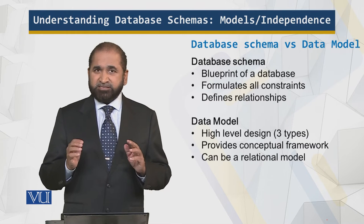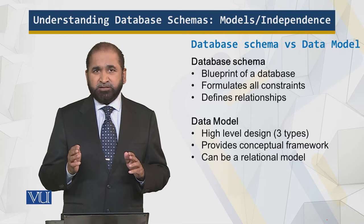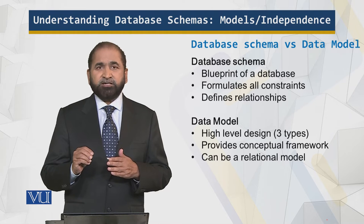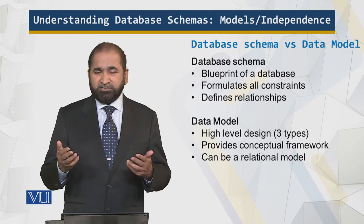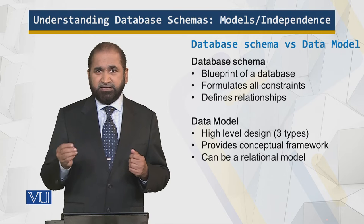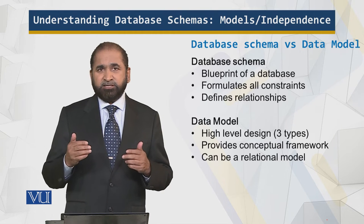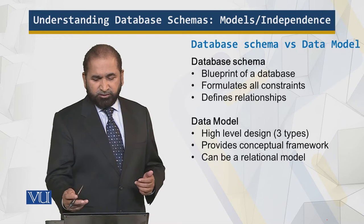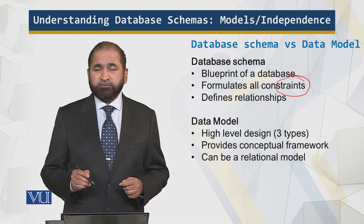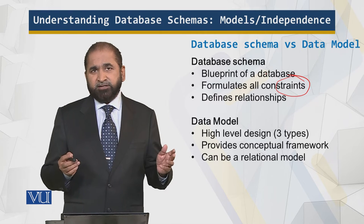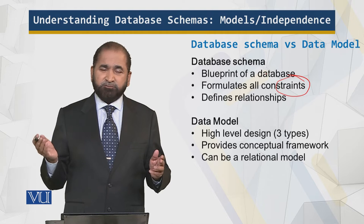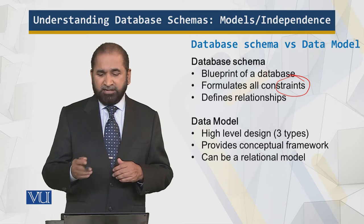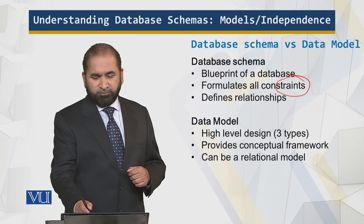We have the database schema and we have the database model. The database schema gives the nitty-gritty details about the data — it's the database blueprint. Just like an architect provides a map with all the fine details, the schema contains and records the formulas, constraints, and defines the relationships. For example, there is an entity called Student and an entity called Course, and there is a relationship between them.